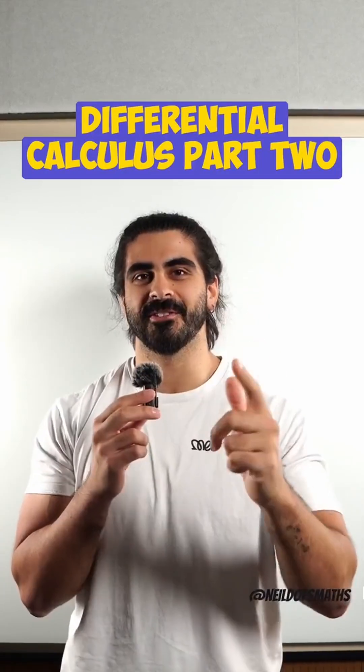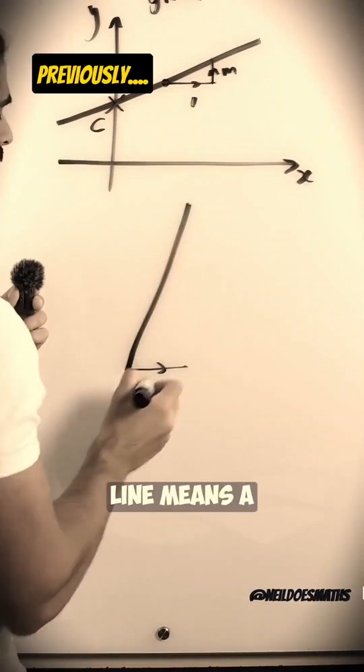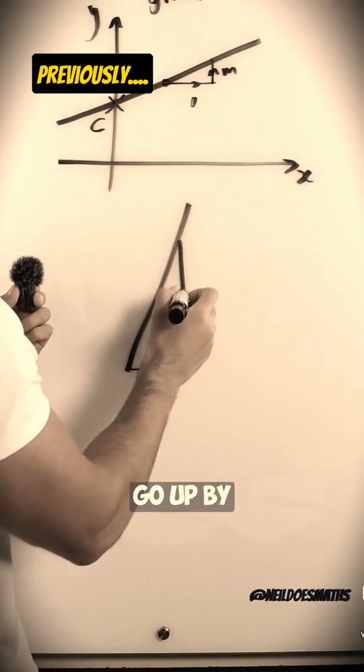Differential Calculus part 2. Let's do this. A steeper line means a larger gradient, meaning for every one you go across, you have to go up by a larger amount.